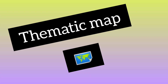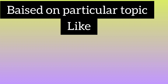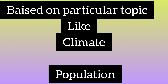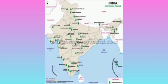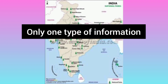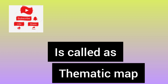Next we are going to discuss about the thematic map. The word itself gives us a clue — it depends upon a particular theme. A thematic map gives information related to one particular type of theme or topic. Only one type of information is shown, and it is called a thematic map.